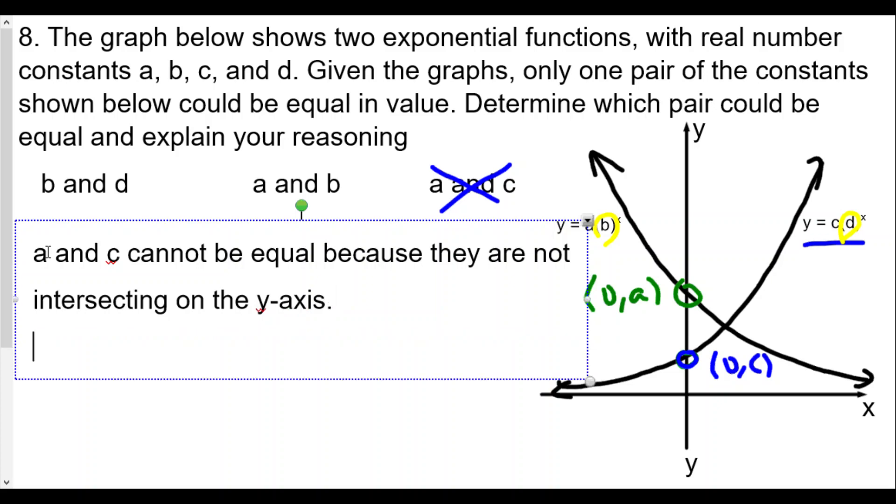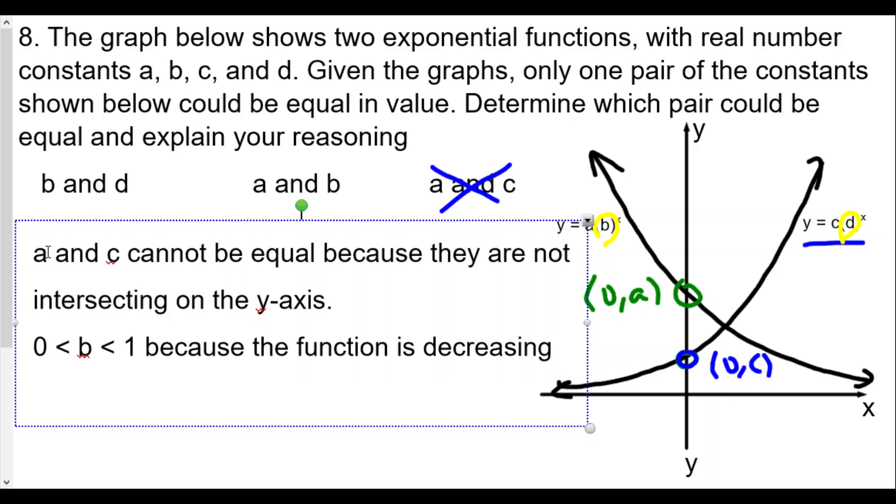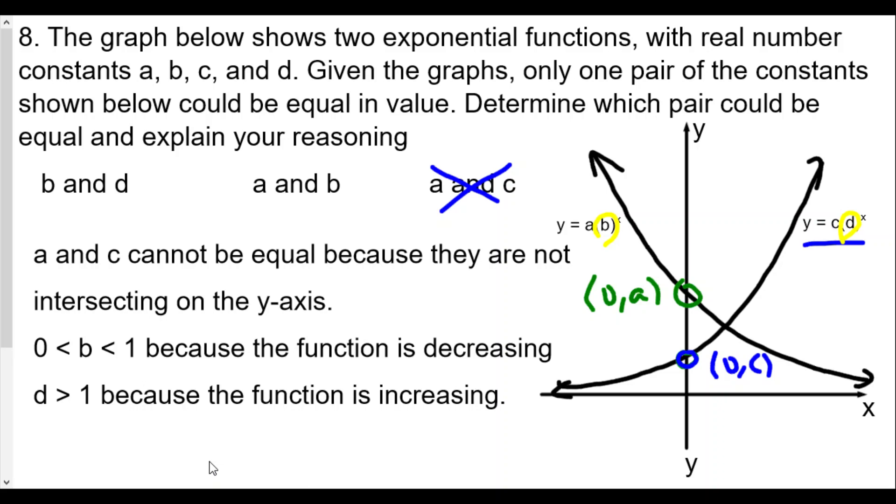Now for b and d: for the first function, b must be between 0 and 1 because the exponential function is decreasing. We talked about how when an exponential function is decreasing, the b value is between 0 and 1. And d must be greater than 1 because the function is increasing.